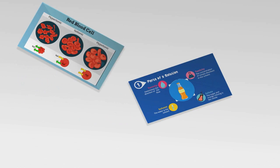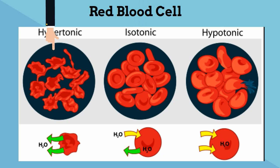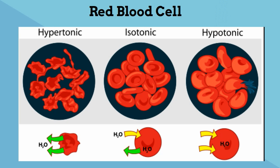In this example I will demonstrate types of solution using a red blood cell. I'll talk about three types of solutions: isotonic, hypertonic, and hypotonic, and how red blood cells will react.